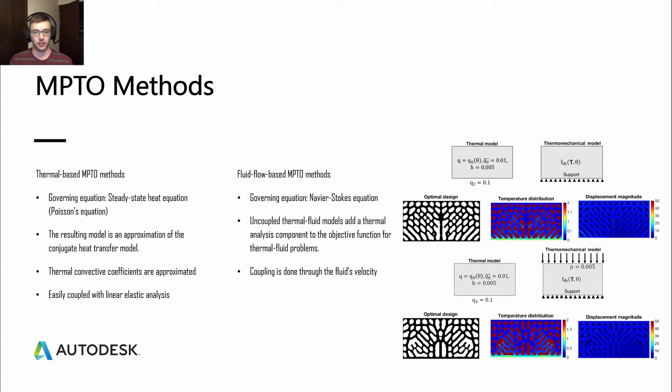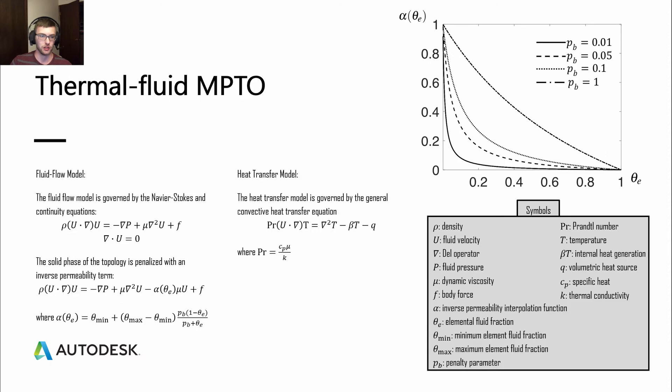On the other hand, we have these fluid flow-based multi-physics topology optimization methods. These are governed by the Navier-Stokes equation. For uncoupled versions of this, the thermal fluid model adds a thermal analysis component to the objective function. However, you can also have it be coupled, and this can be done through the fluid's velocity, which we will look at on the next slide.